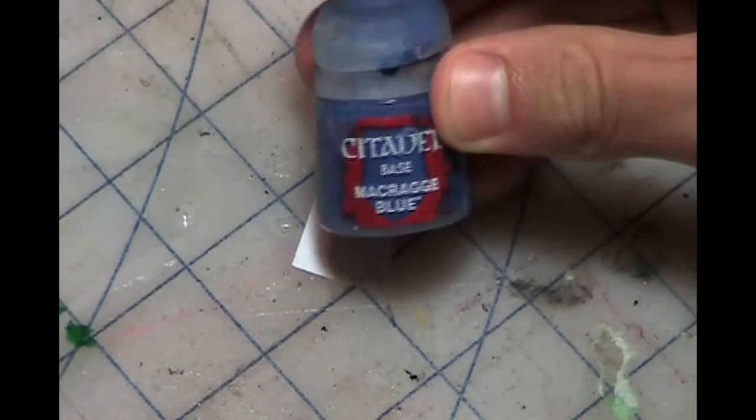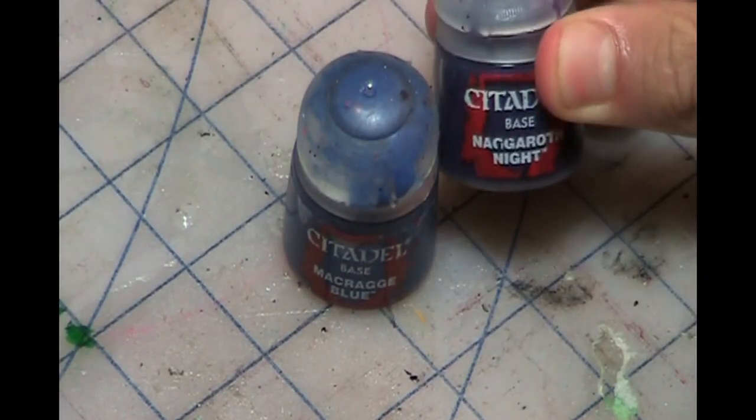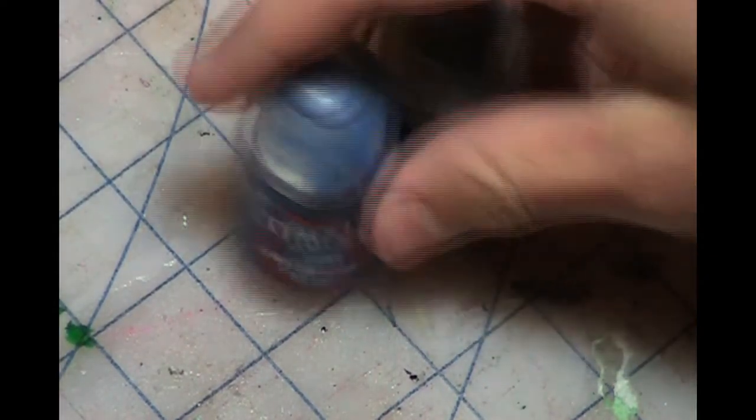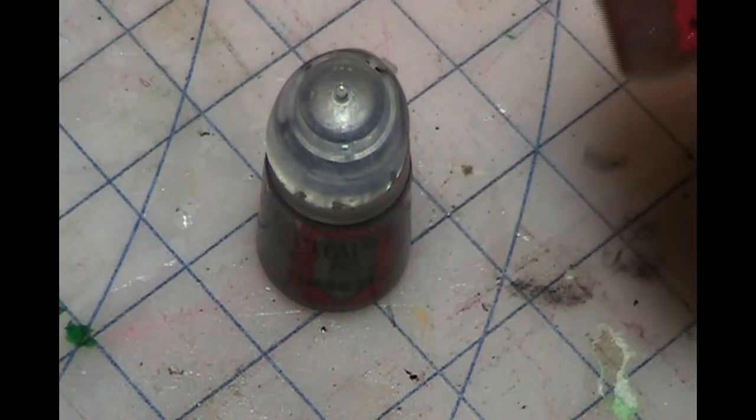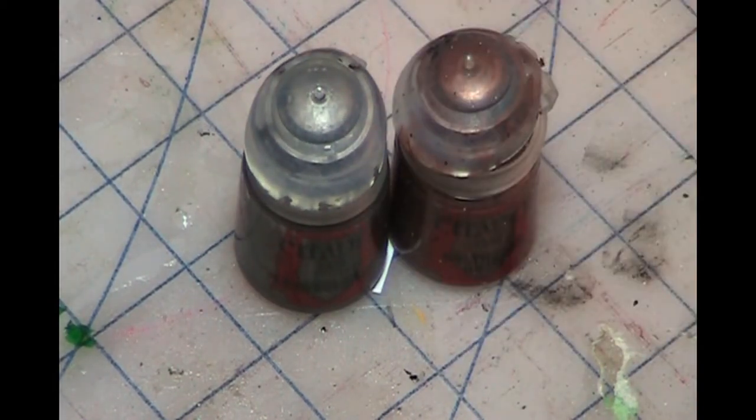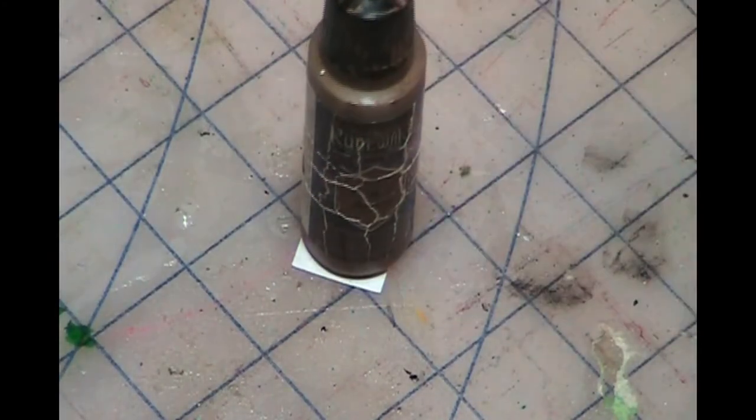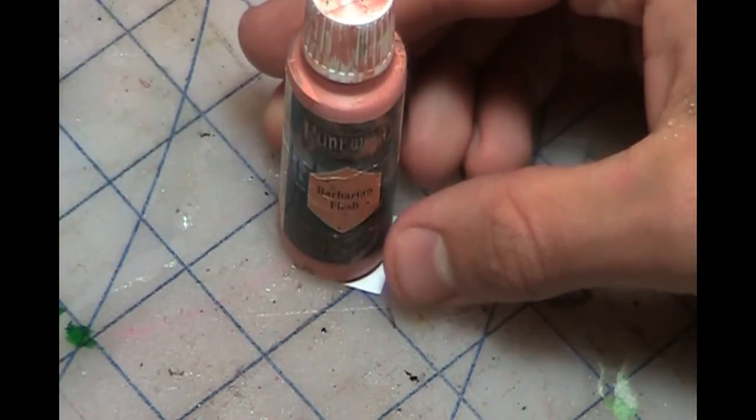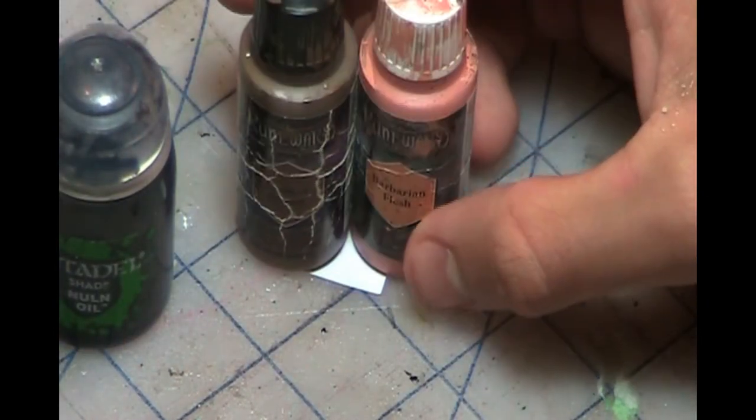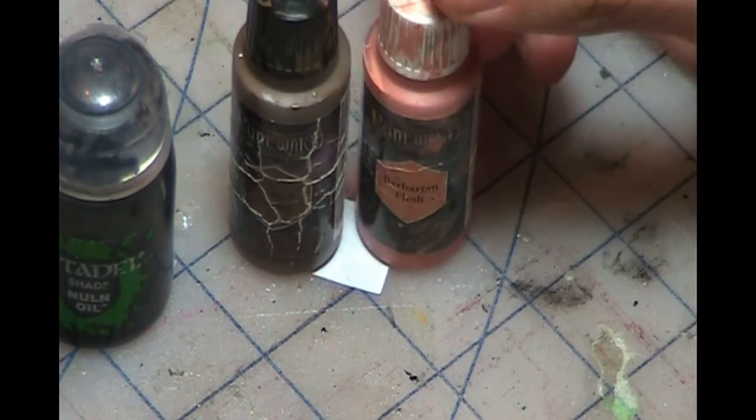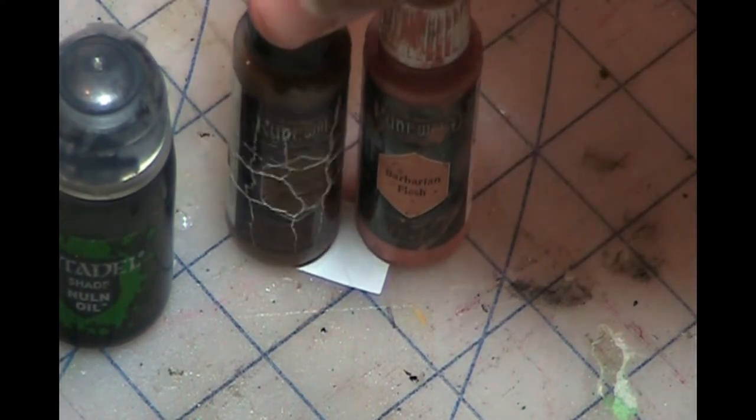I will be using McCraggy Blue and Niagroth Knight for the cloaks, Lead Belcher and Balthazar Gold, which is basically a bronze, for the weapons, Leather Brown for the skin and fur, and Barbarian Flesh for the tails, along with the Nuln Oil Shade. You could probably use some Citadel paints for these, but I just have these Army Painter paints lying around and I decided to use these.